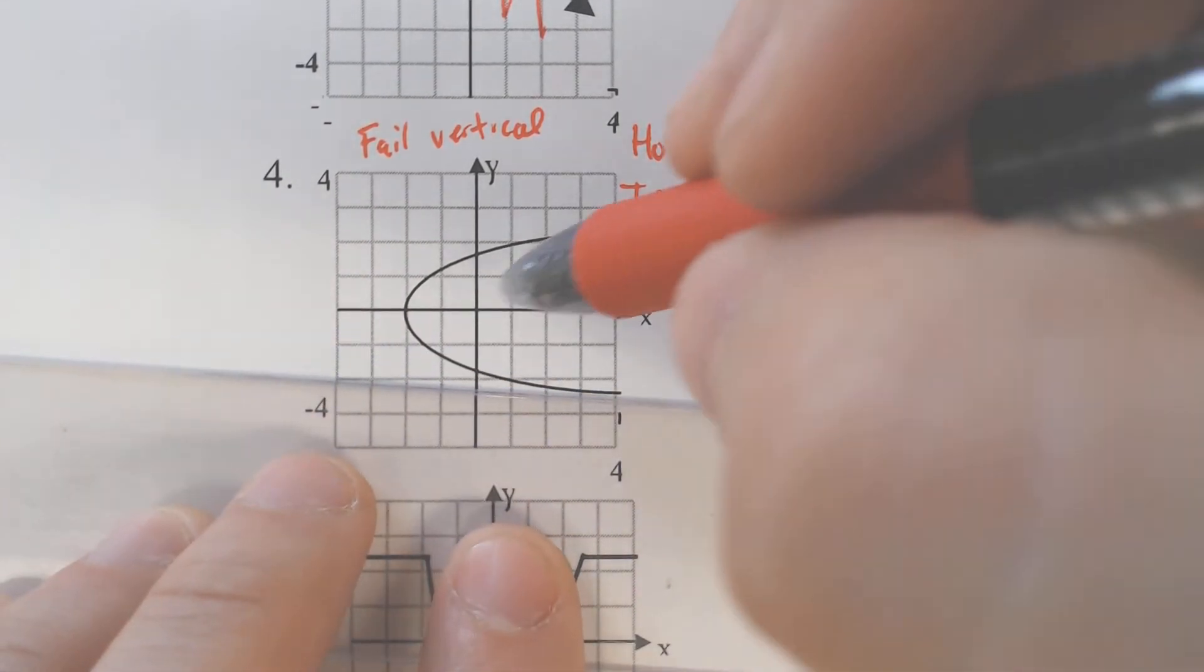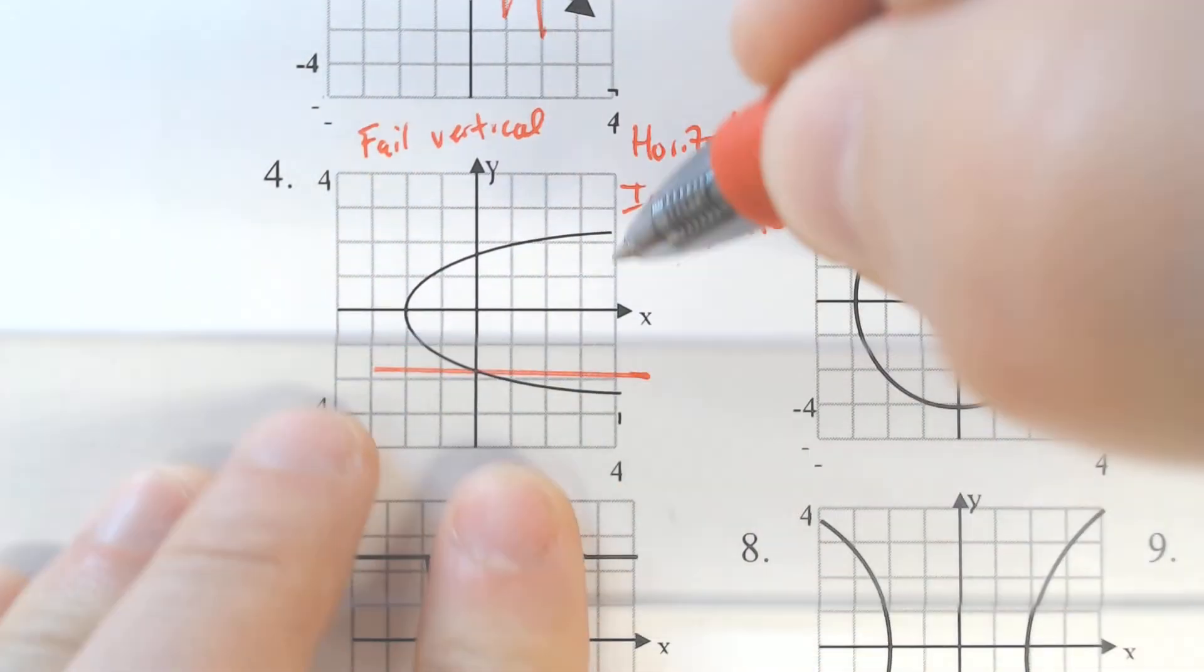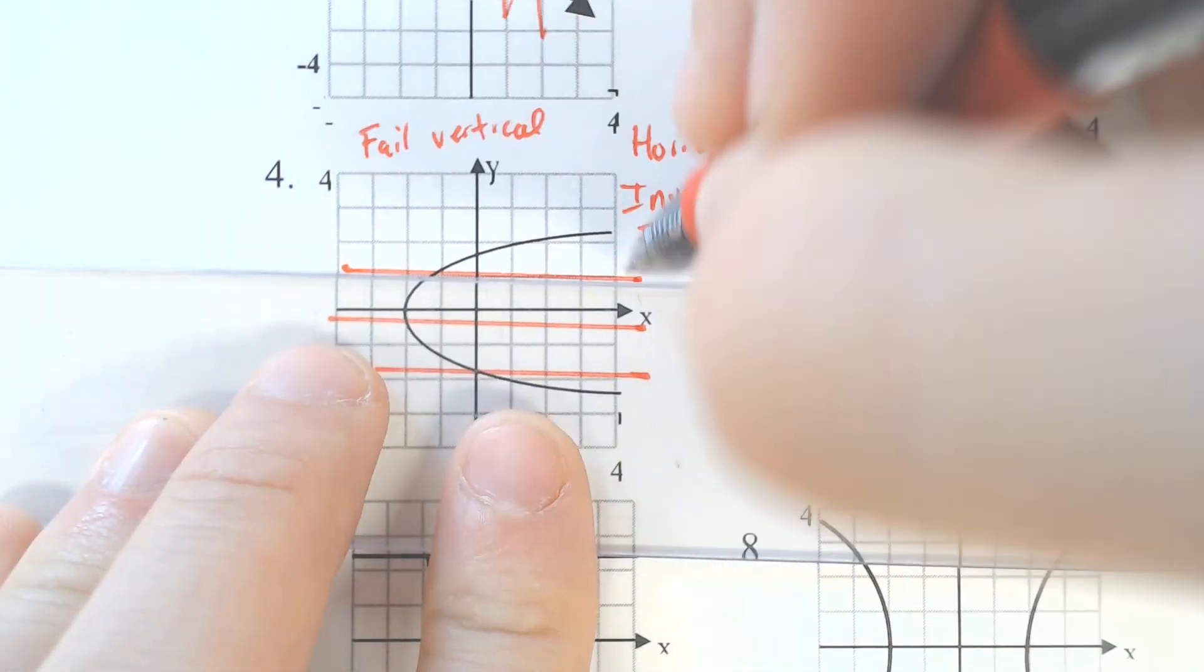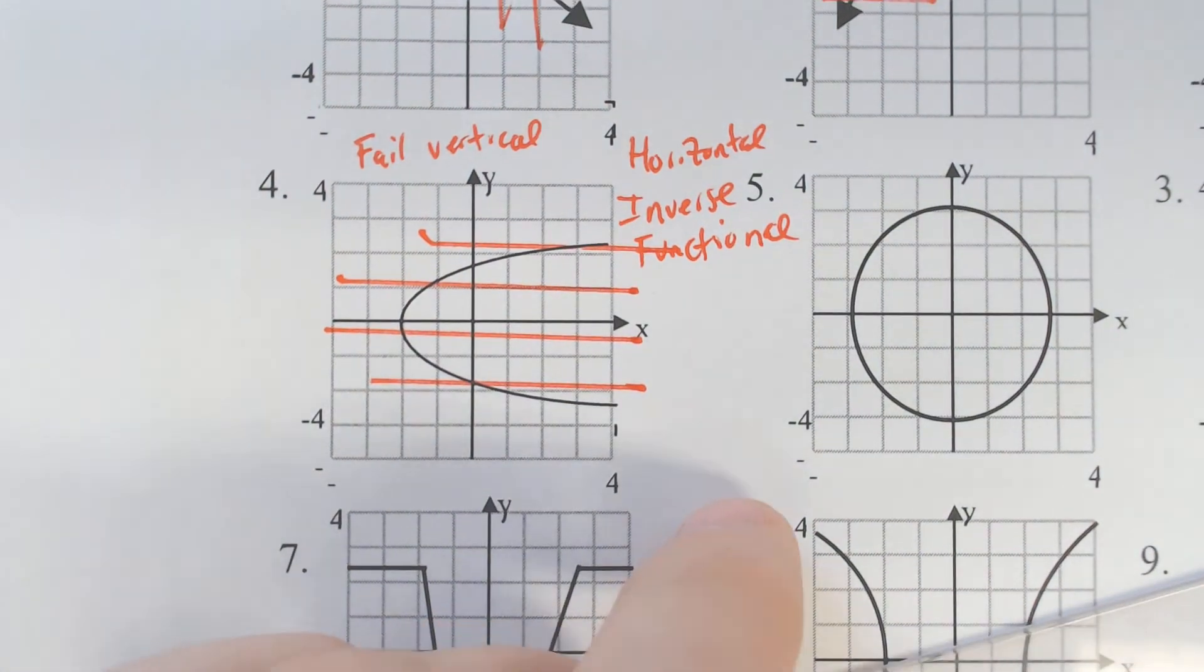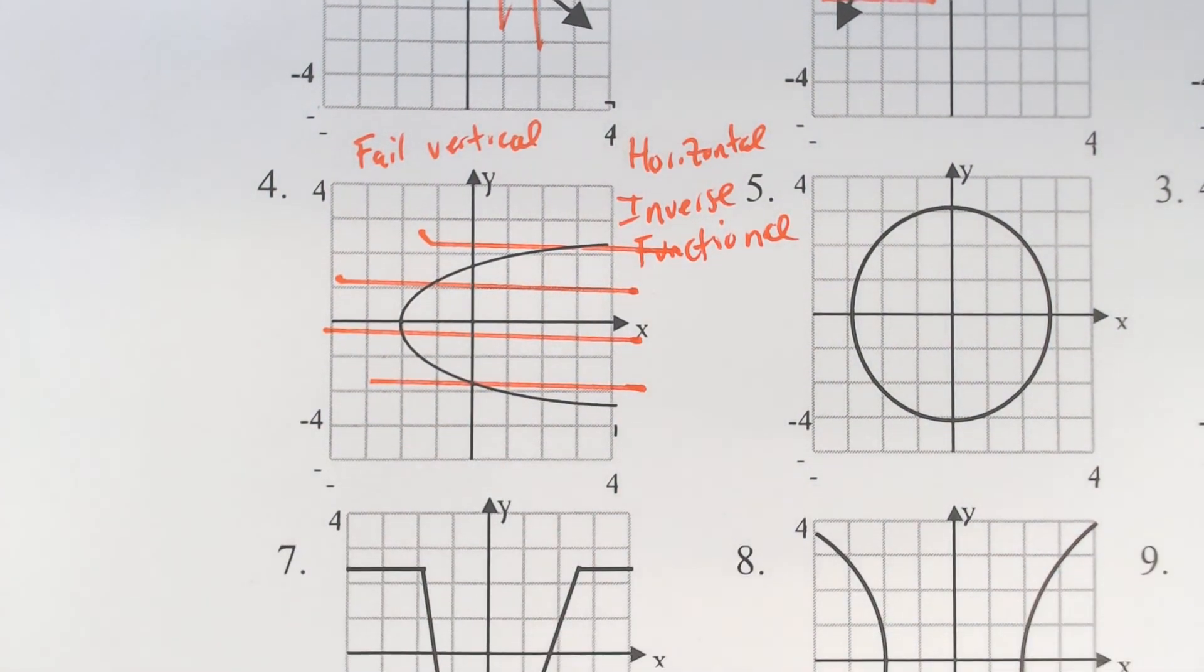So here, the horizontal line test still passes, which is kind of neat to see something where the vertical line test did not work, but the horizontal one did.